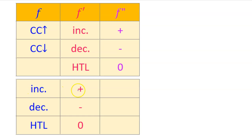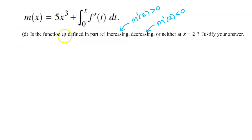According to our memorized information, the original function will be increasing when the first derivative is positive and decreasing when the first derivative is negative. So m will be increasing at x equals 2 if m prime at 2 is positive and decreasing if m prime at 2 is negative. It will be neither if m prime at 2 is equal to 0 or if it's undefined.